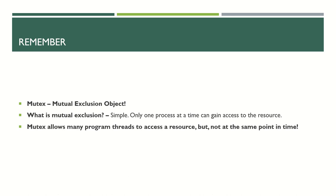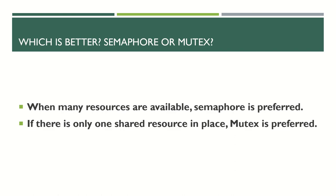What is mutex? Mutual exclusion object. Mutual exclusion means only one process at a time can gain access to the resource. Mutex allows many program threads to access a resource, but not at the same point in time. This is a very important point to remember.